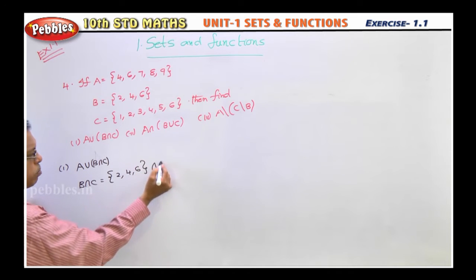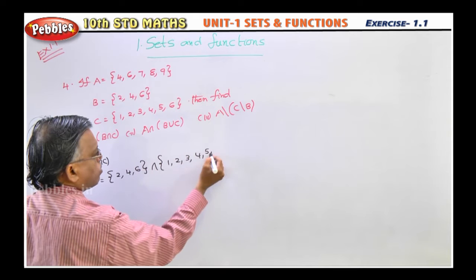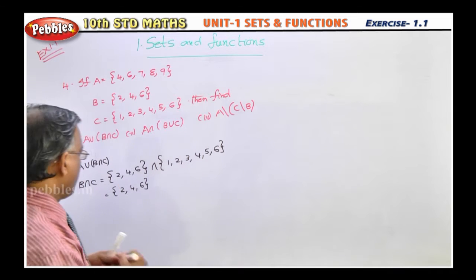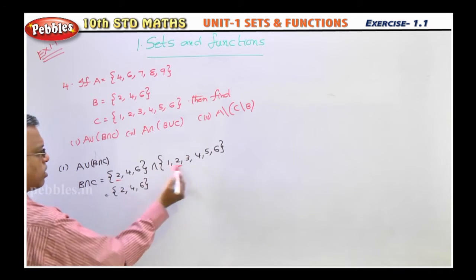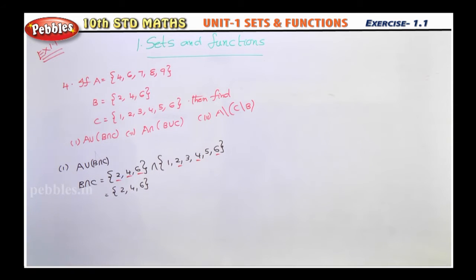Then use the intersection symbol. Then C set: 1, 2, 3, 4, 5, 6. So what is common in these two sets? 2 is there, 4 is there, 6 is there. What is the meaning of this intersection? Common elements. So this element is present here, here, here. So those elements only have to write it down.